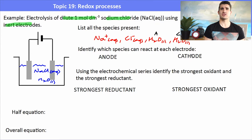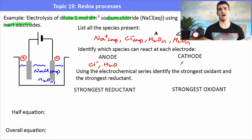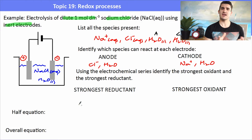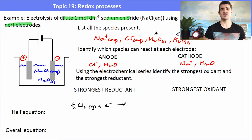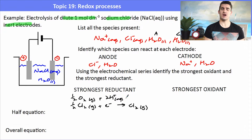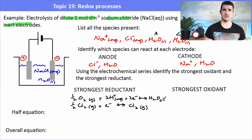We work out which species will react at the anode and cathode. The anode is positive and will attract negatively charged ions — chloride ions and water. The cathode is negatively charged and will attract sodium ions and water. We write down the half-equations from the electrochemical series and identify the strongest reductant and strongest oxidant. In an exam you would simply look at the table and identify the two reactions.